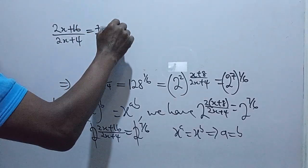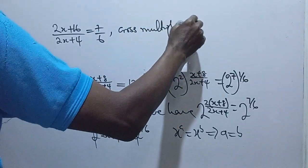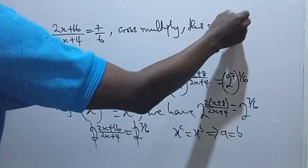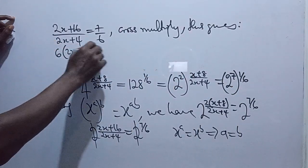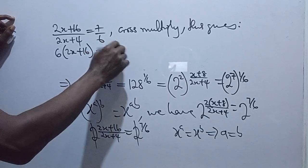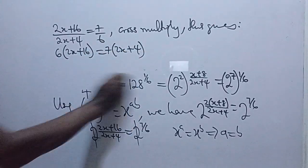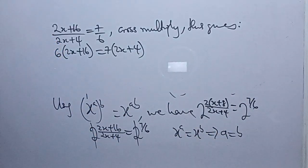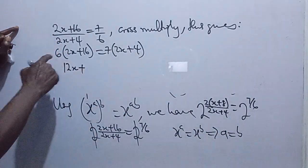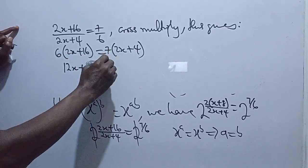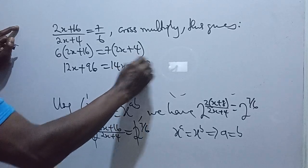So the next thing is to cross-multiply. When you cross-multiply, you have 6 into 2x plus 16 is equal to 7 into 2x plus 4. So we have 12x plus 96 is equal to 14x plus 28.